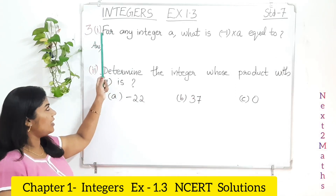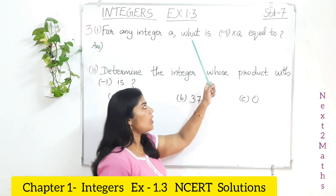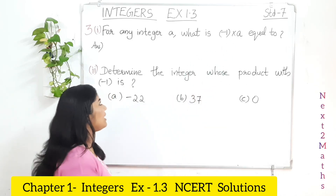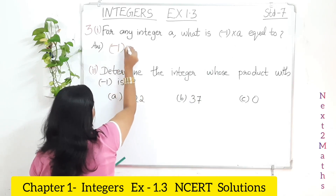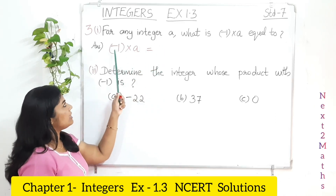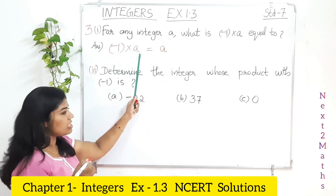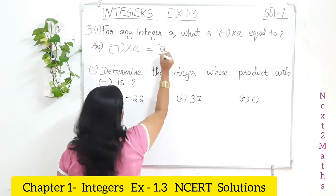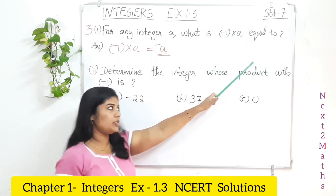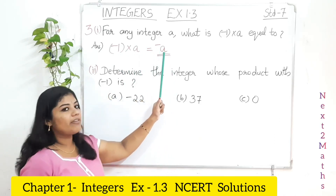Question number 3, part 1: For any integer A, what is negative 1 multiplied with A equal to? If you have A and multiply it with negative 1 — first, 1 multiplied with A is A, and put the negative sign because one factor is positive and one is negative. So negative 1 multiplied with any integer A gives negative A.